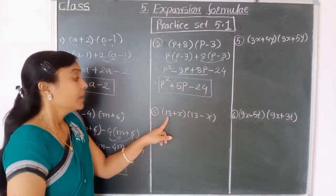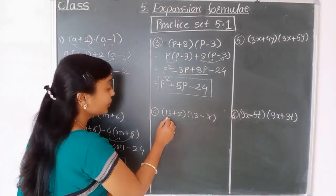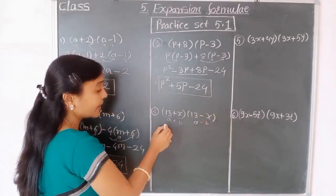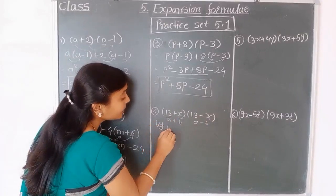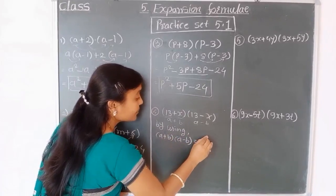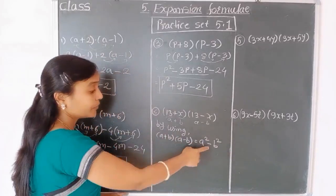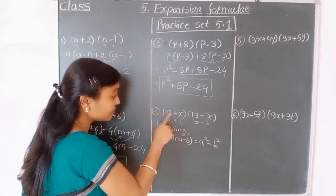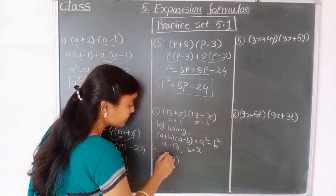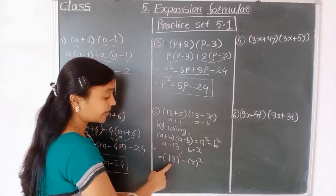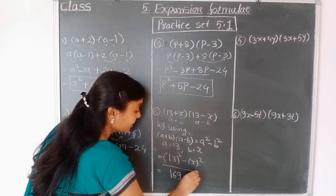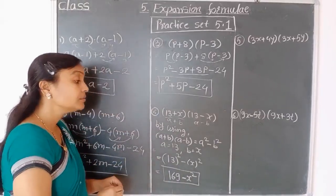Fourth example: 13 plus x into 13 minus x. Here a equals 13 and b equals x, so this is of the form a plus b into a minus b. We know this formula equals a squared minus b squared. So we directly write: 13 squared minus x squared. 13 squared is 169, so the answer is 169 minus x squared. From the formula we directly write down the answer.